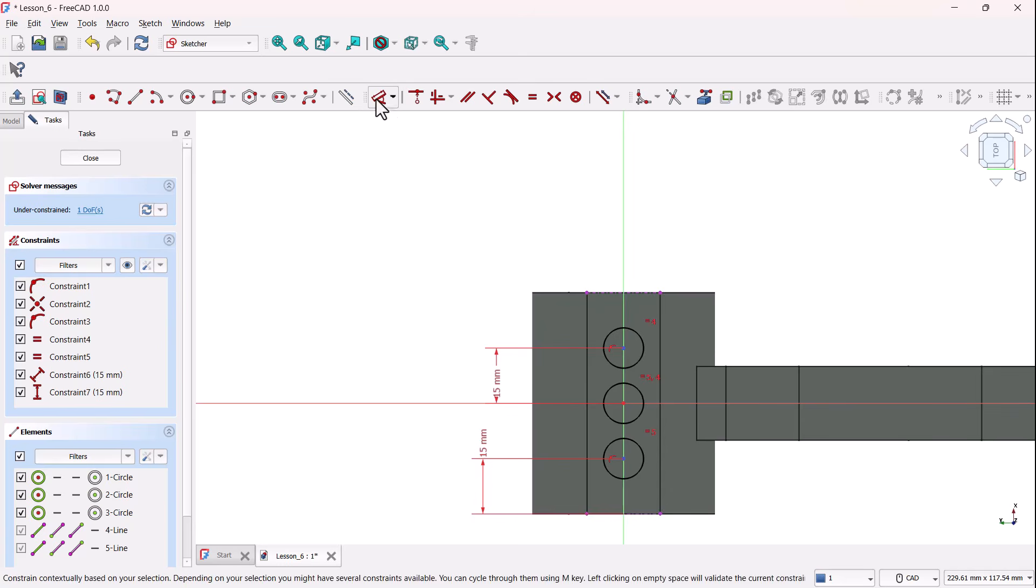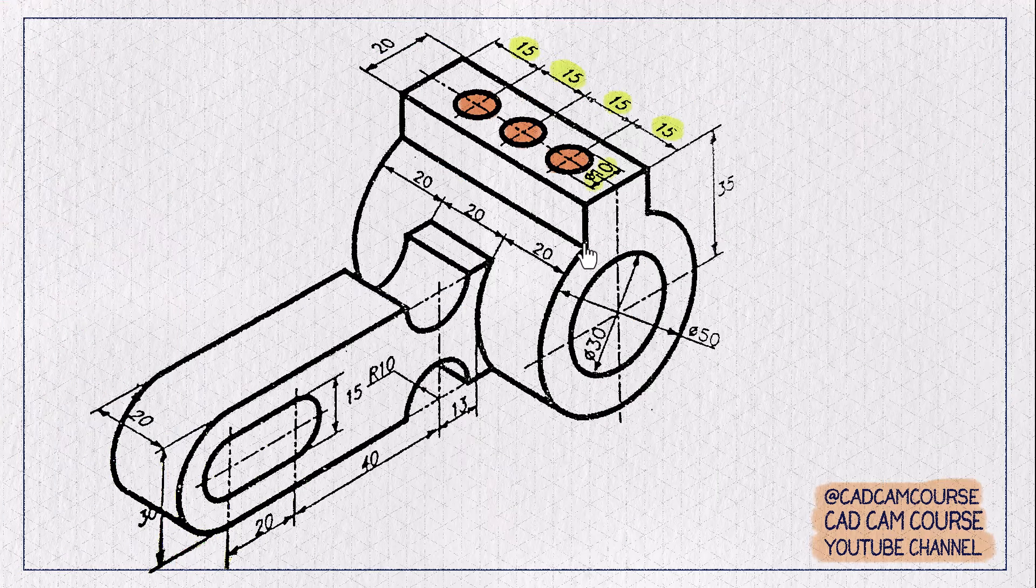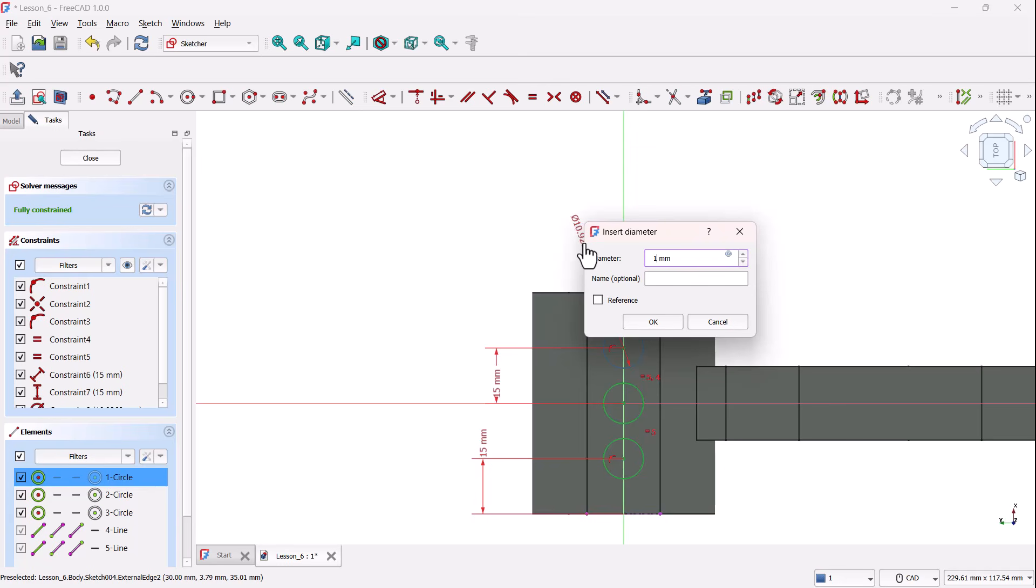Since we applied the equal constraint earlier, we only need to define the diameter for one circle. Now, just click on any one of these circles. I'll select this one here and set its diameter to 10 millimeters. And because we applied that equal constraint earlier, you'll see all three circles automatically update to match this size.